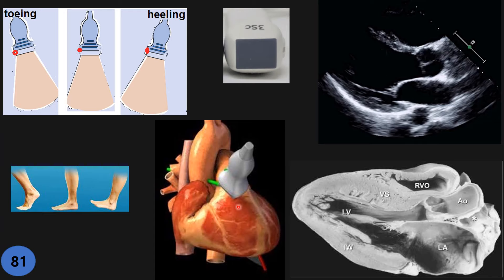Now another question: if you want to see more ascending aorta, what should you do? In the classic PLAX orientation, we only get the proximal aorta — a little above the sinotubular junction. We have the sinus of Valsalva, the sinotubular junction, and just a little of the ascending aorta. If I want to see more ascending aorta, I have two options: slide the probe and twist it clockwise. That makes the sector pass through more of the aorta, showing less left ventricle and just a little right atrium and right ventricle, but a longer view of ascending aorta.